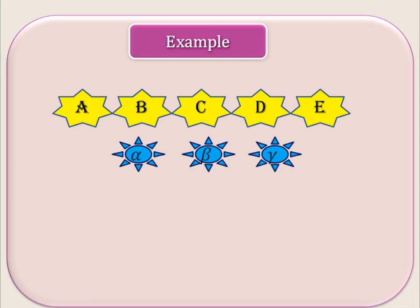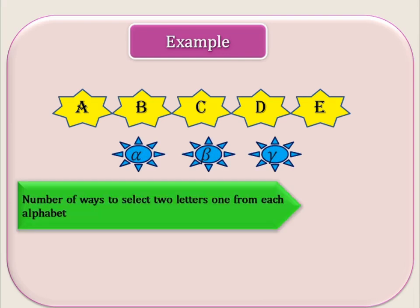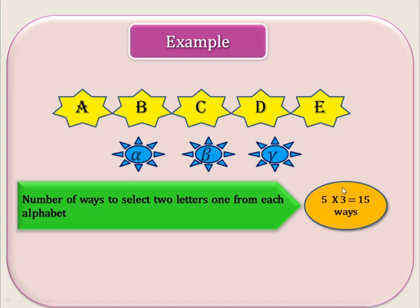So we have 5 English letters and 3 Greek letters. How many ways can we select 2 letters, 1 from each alphabet? Since we are selecting one from each, we use the rule of product. The first event is 5 ways and the second event is 3 ways. So the number of ways to select 2 letters, 1 from each alphabet, is 5 × 3 = 15 ways.